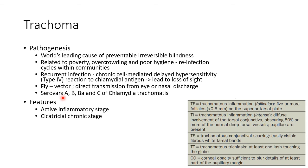Trachoma is caused by serological variants A, B, BA, and C of Chlamydia trachomatis. The WHO classification of trachoma: TF is trachomatous inflammation — follicular stage — with 5 or more follicles greater than 0.5mm on the superior tarsal plate. TI is trachomatous inflammation — intense stage — with diffuse involvement of the tarsal conjunctiva obscuring 50% or more of the normal deep tarsal vessels, with papillae present.